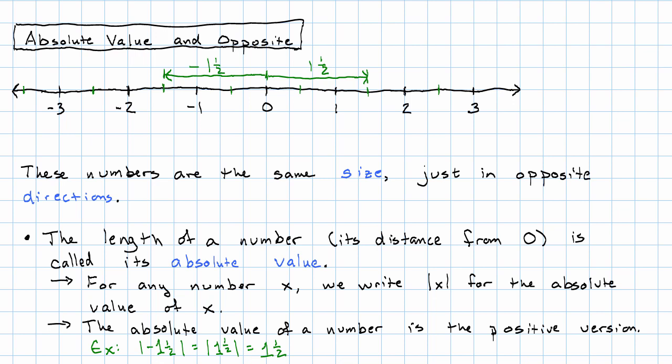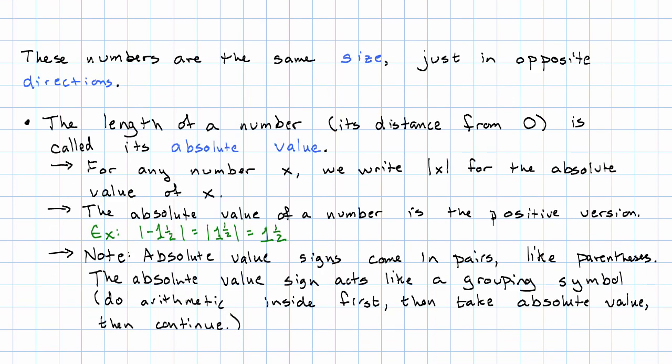One other thing to be aware of about the absolute value. Because they come in pairs, that's our clue that they probably act as a grouping symbol. And in fact, they do. So that means if I see arithmetic inside an absolute value, I'm going to do that arithmetic first. Then I'm going to take the absolute value. And then I'm going to do any other arithmetic that's around.